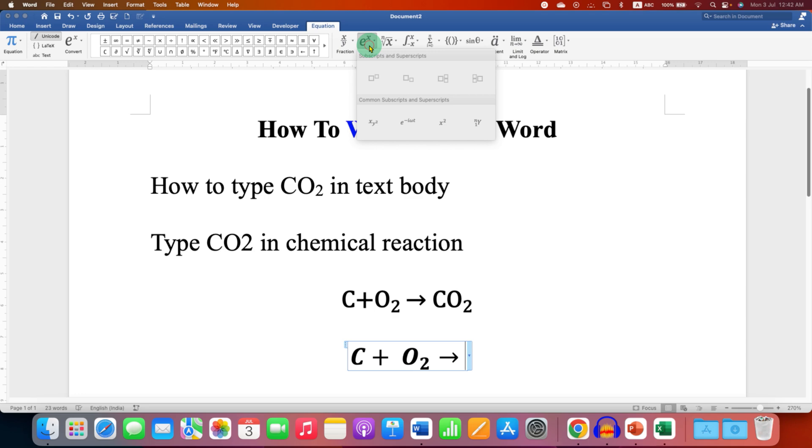For CO2, just go to the script subscript option. In the first box type CO and in the next box type 2. To remove the italics, just select everything and click on ABC text under the equation.